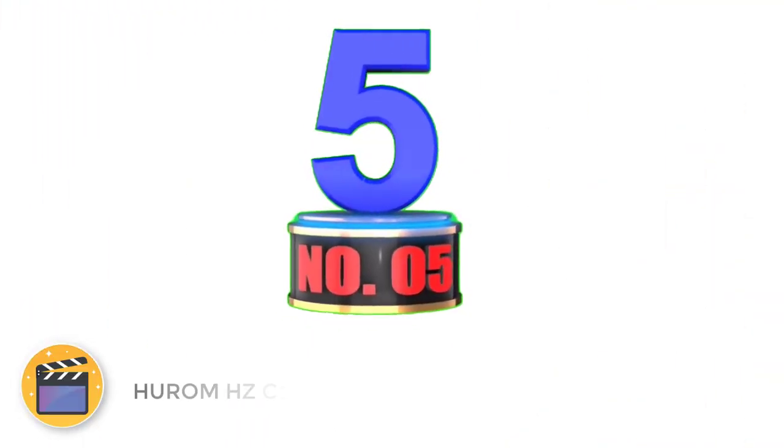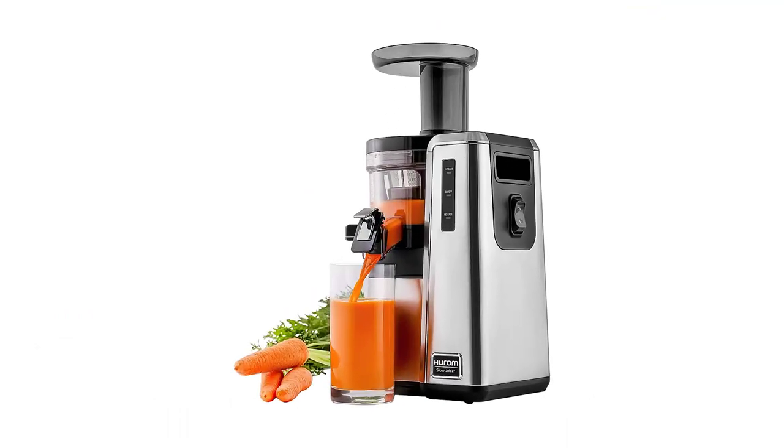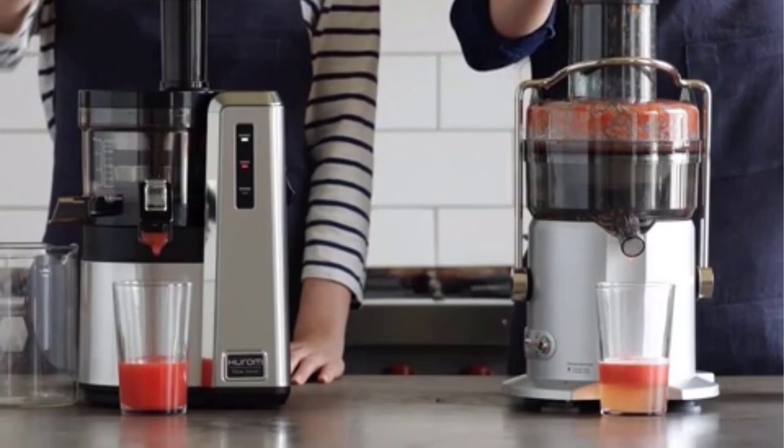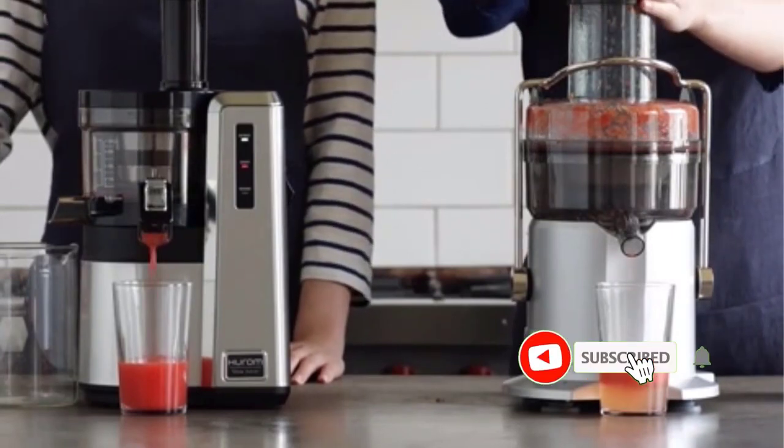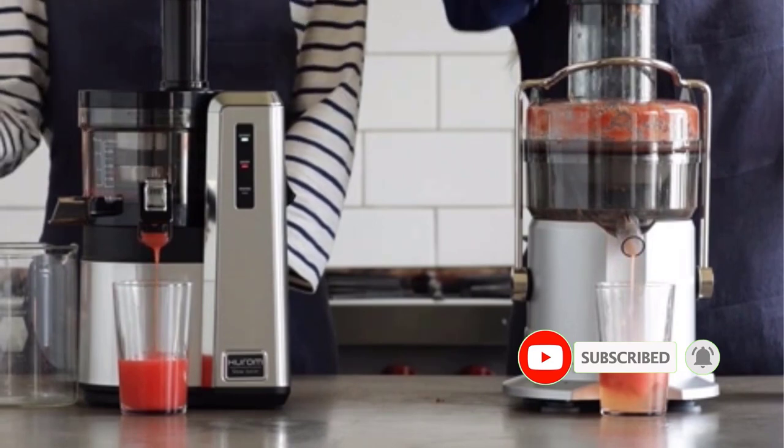Number 5. Hurom HZ Commercial Masticating Juicer. Hurom HZ Commercial Masticating Juicer is a commercial juicer that can extract juice from fruits, vegetables, leafy greens and wheatgrass. It is great for small to medium-sized restaurants or health food stores.